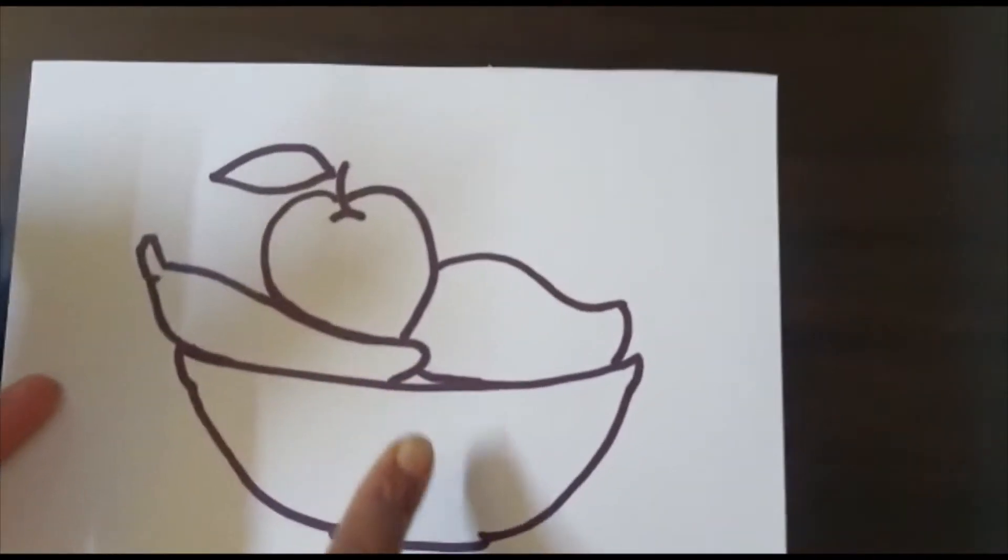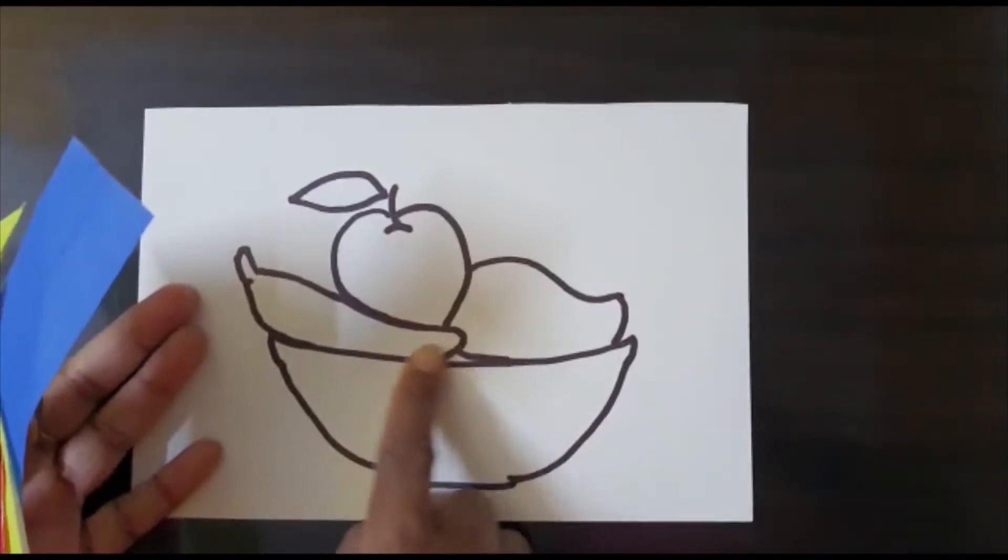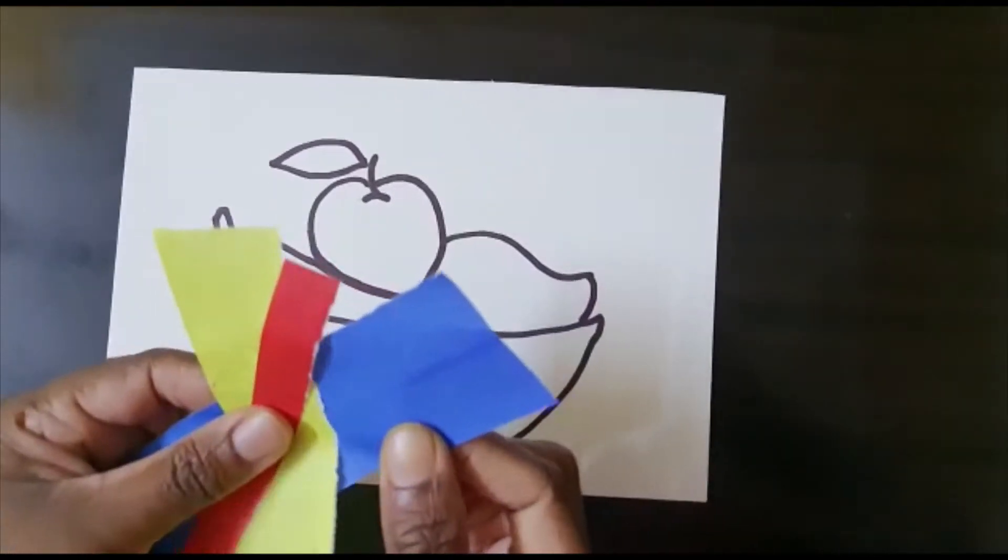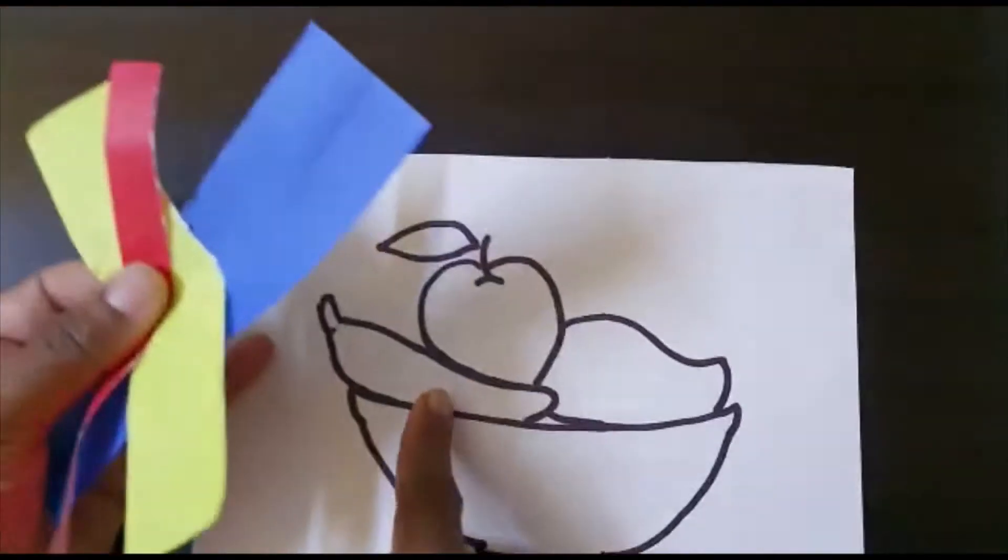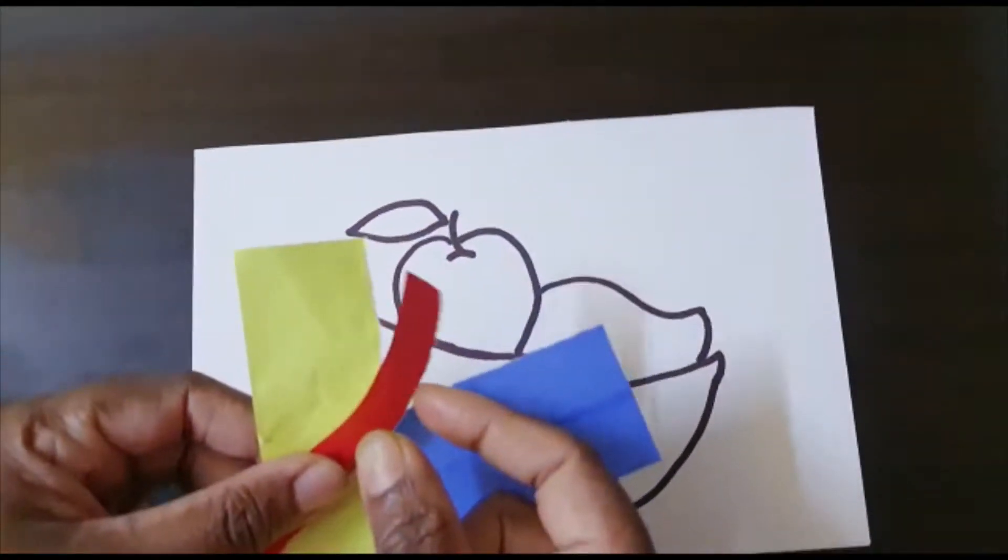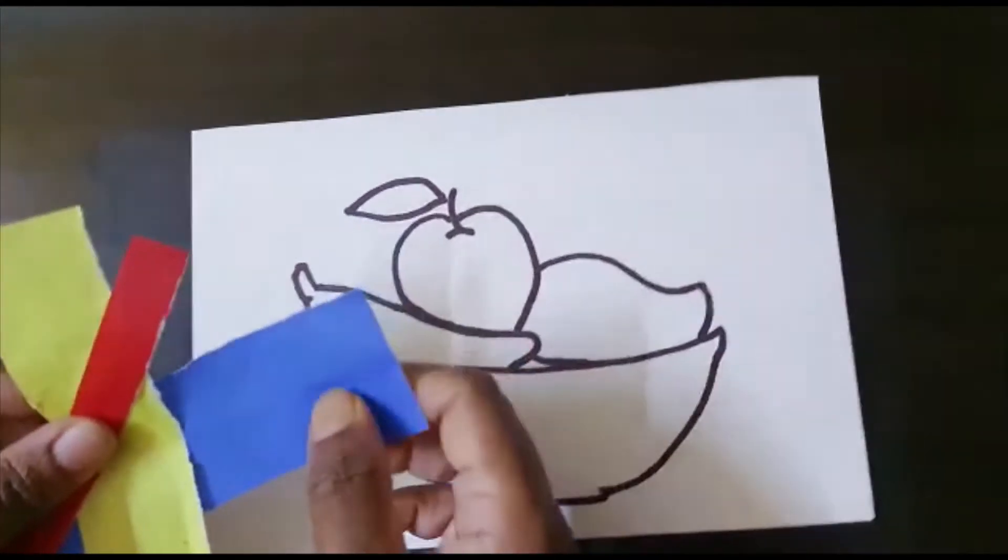We will be doing a tear and paste activity. This is a fruit bowl and we have taken three colors: blue for the basket, yellow for banana and mango, and red for apple.